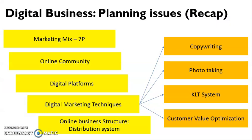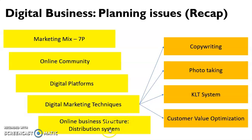A recap about what you learned in Unit 5: we talked about digital business, marketing mix 7P, online community, and digital platforms such as website, Facebook, WhatsApp, Instagram, and so on. We also talked about digital marketing techniques and online business structure. Today I will talk about digital marketing techniques in more detail.